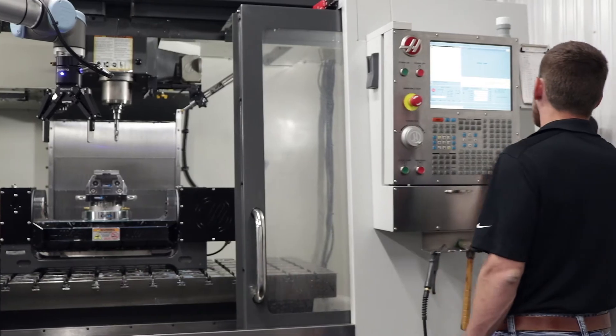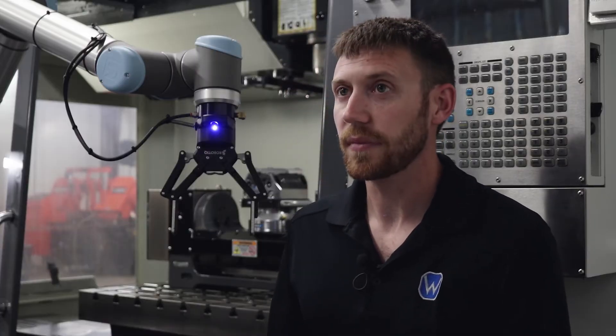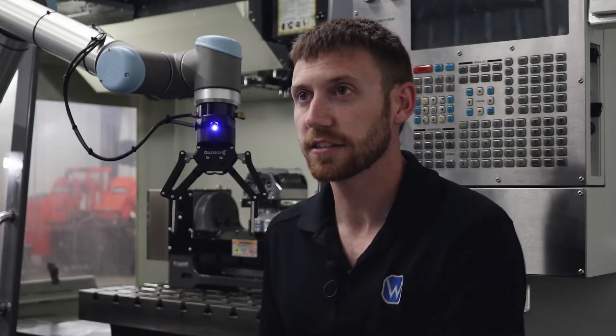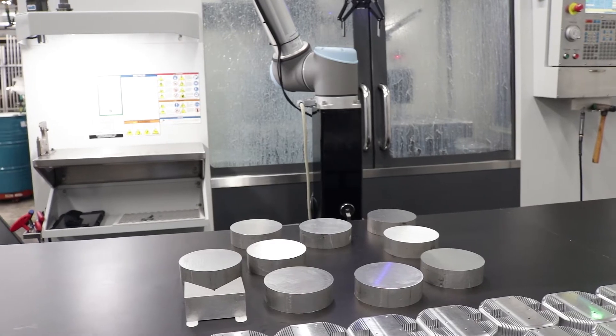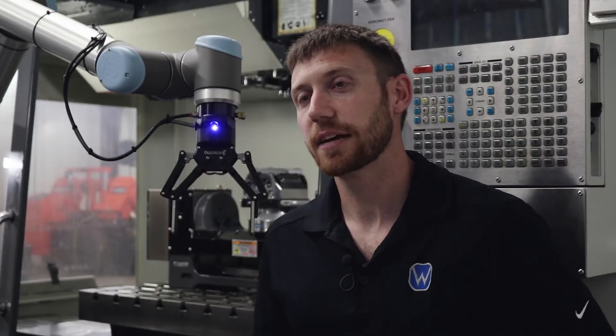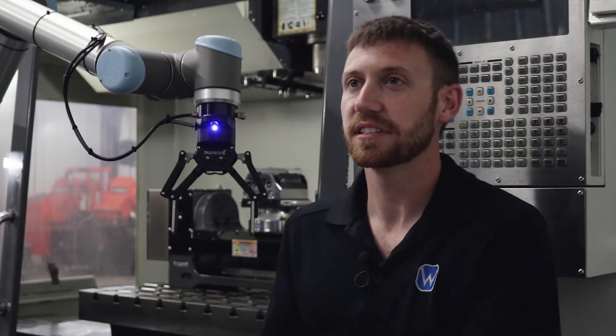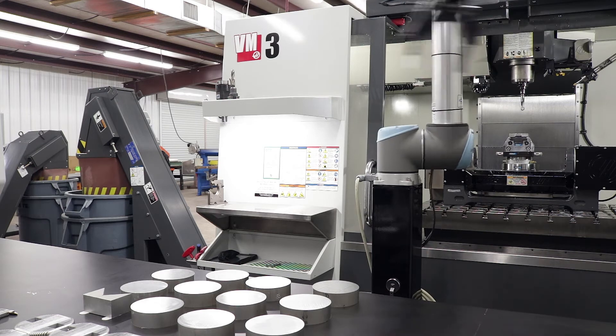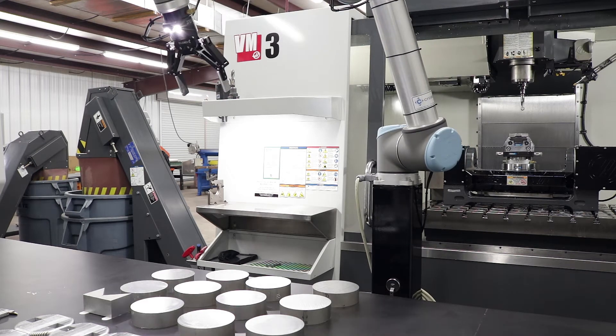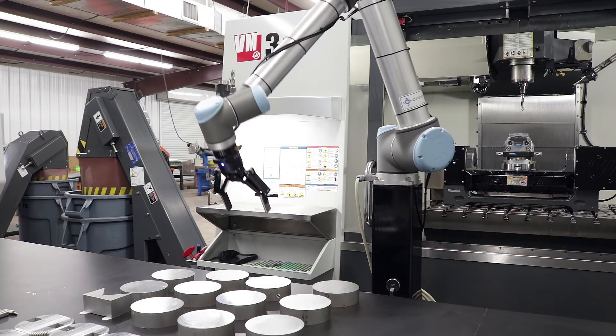You have two ways of teaching it. Either you take your part and you set it on the surface which you want to pick from, and you take four snapshots of it in four different orientations and it's taught. Or if it's something simple like a rectangle or a circular blank, you just tell it the dimensions of what you're picking and it knows.